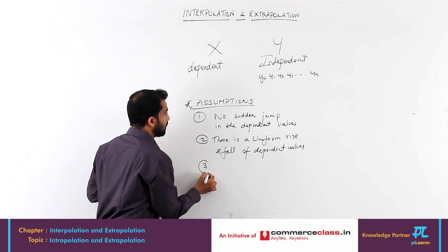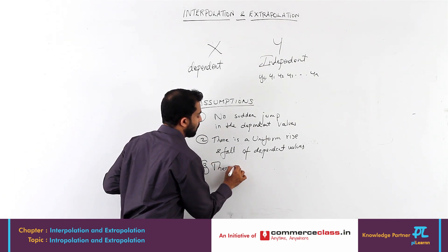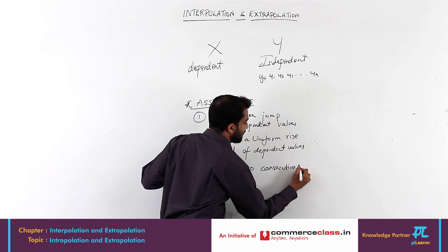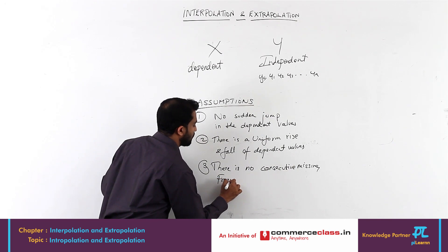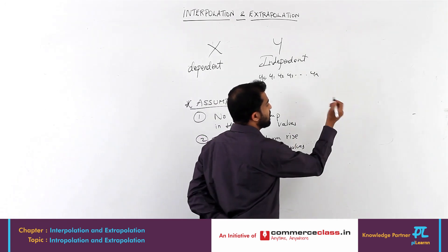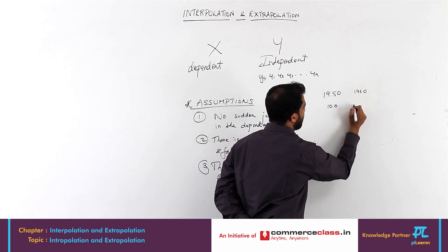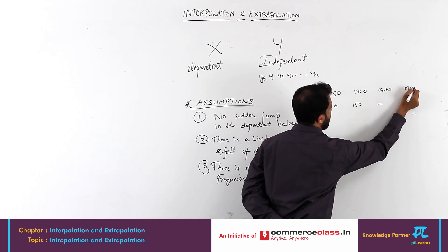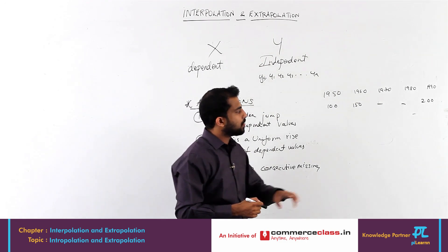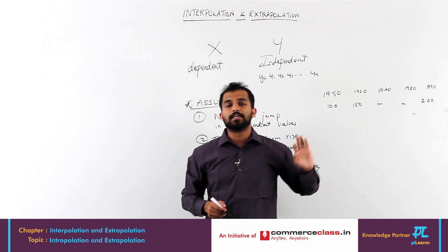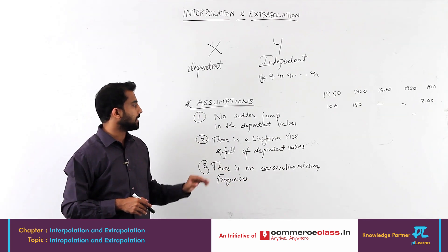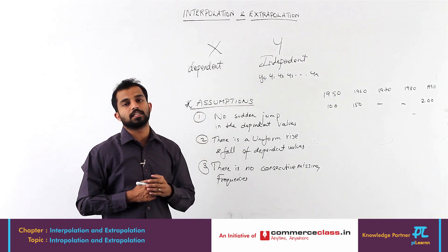The third assumption is there are no consecutive missing frequencies. That means they will not give you a question like: 1950 is 50, 1960 is 150, 1970 is unknown, 1980 is also unknown, 1990 is 200. They cannot give you consecutively two missing frequencies. If they give consecutively two missing frequencies, we cannot work it out — that is why the assumption states there are no consecutive missing frequencies. These are the three assumptions on which interpolation and extrapolation are based.